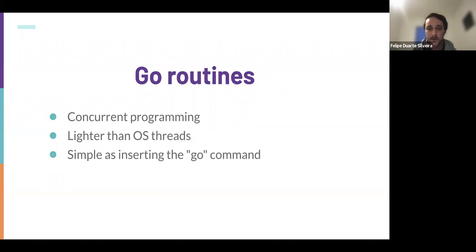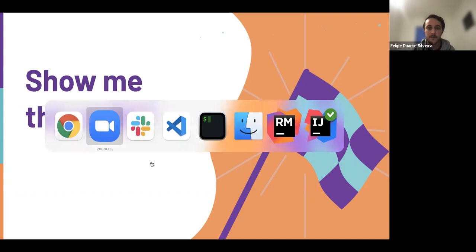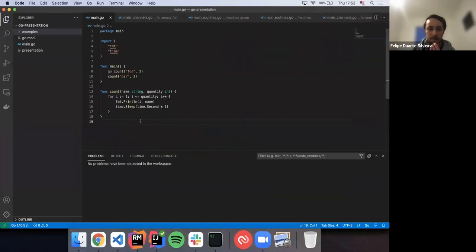To build a goroutine it's as simple as inserting the 'go' keyword before any function call. Anywhere in Go code, if you insert the 'go' command, that function will run as a goroutine. When you trigger a goroutine it runs asynchronously and the code continues. It's really useful when you need to do many jobs — like background jobs — and you can trigger different goroutines to execute those jobs at the same time.